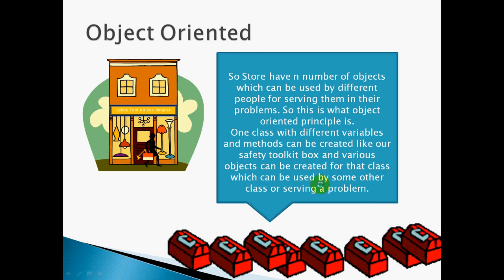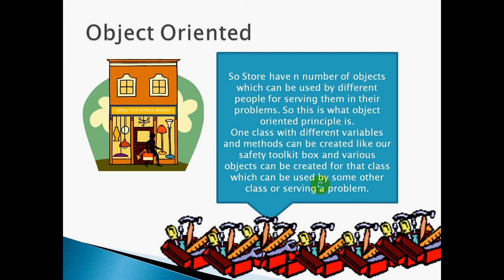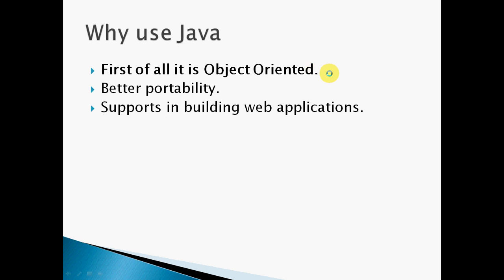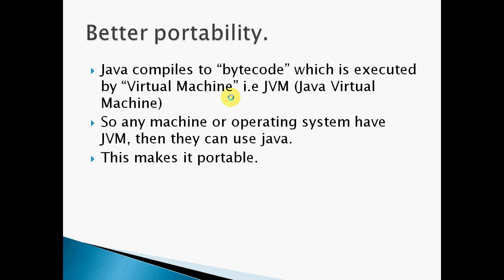So we've discussed the first point, which is object-oriented. Now let's discuss why Java is portable. When writing Java code, it is written in regular text using a keyboard. But once we compile this code, it converts to bytecode. This bytecode can only be executed in a virtual machine called the JVM — Java Virtual Machine. This is why it's portable: if any machine or operating system — Mac, Windows, XP, or any other — has the JVM, they can use Java. So that makes it portable; you write code in it and you can make applications from it.